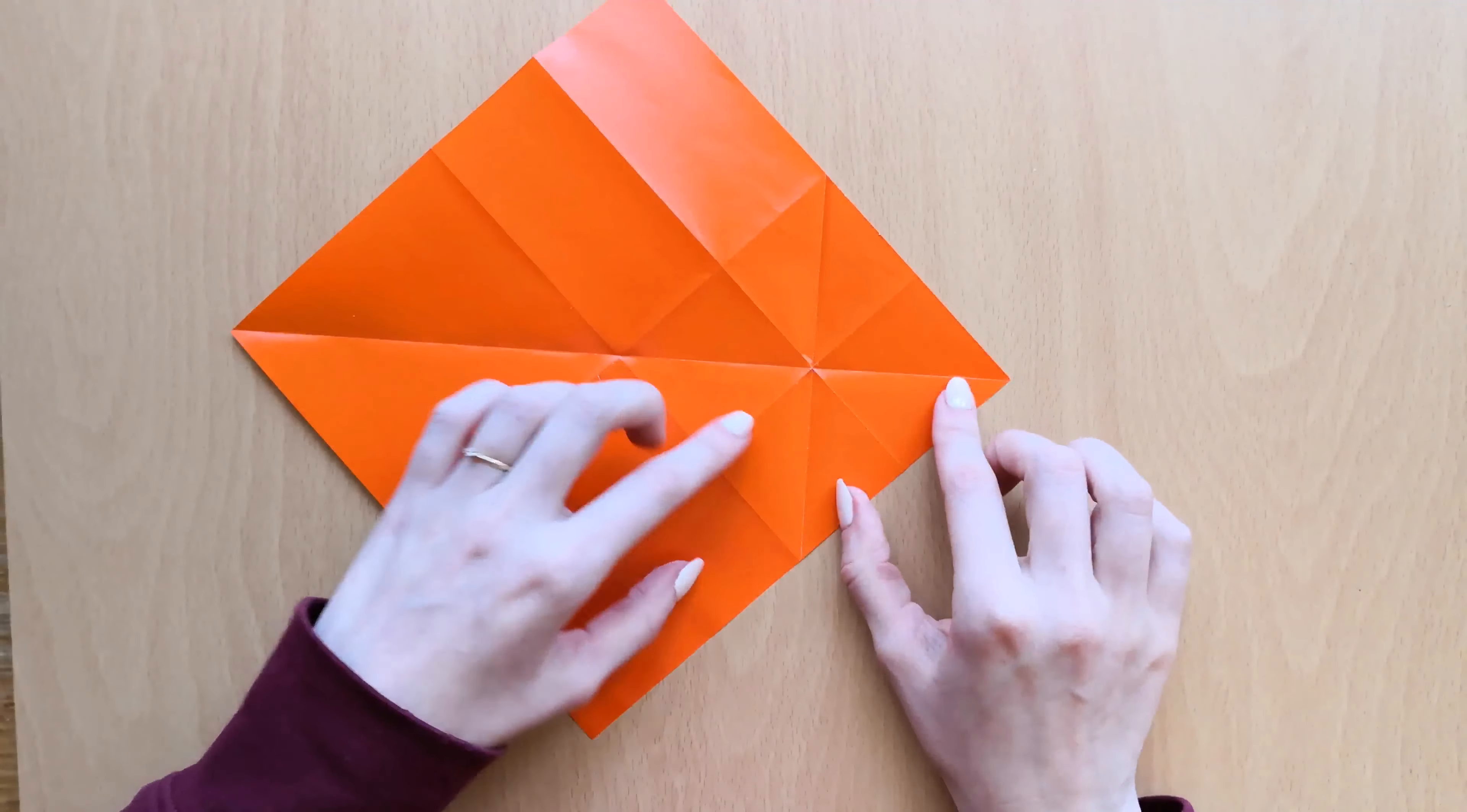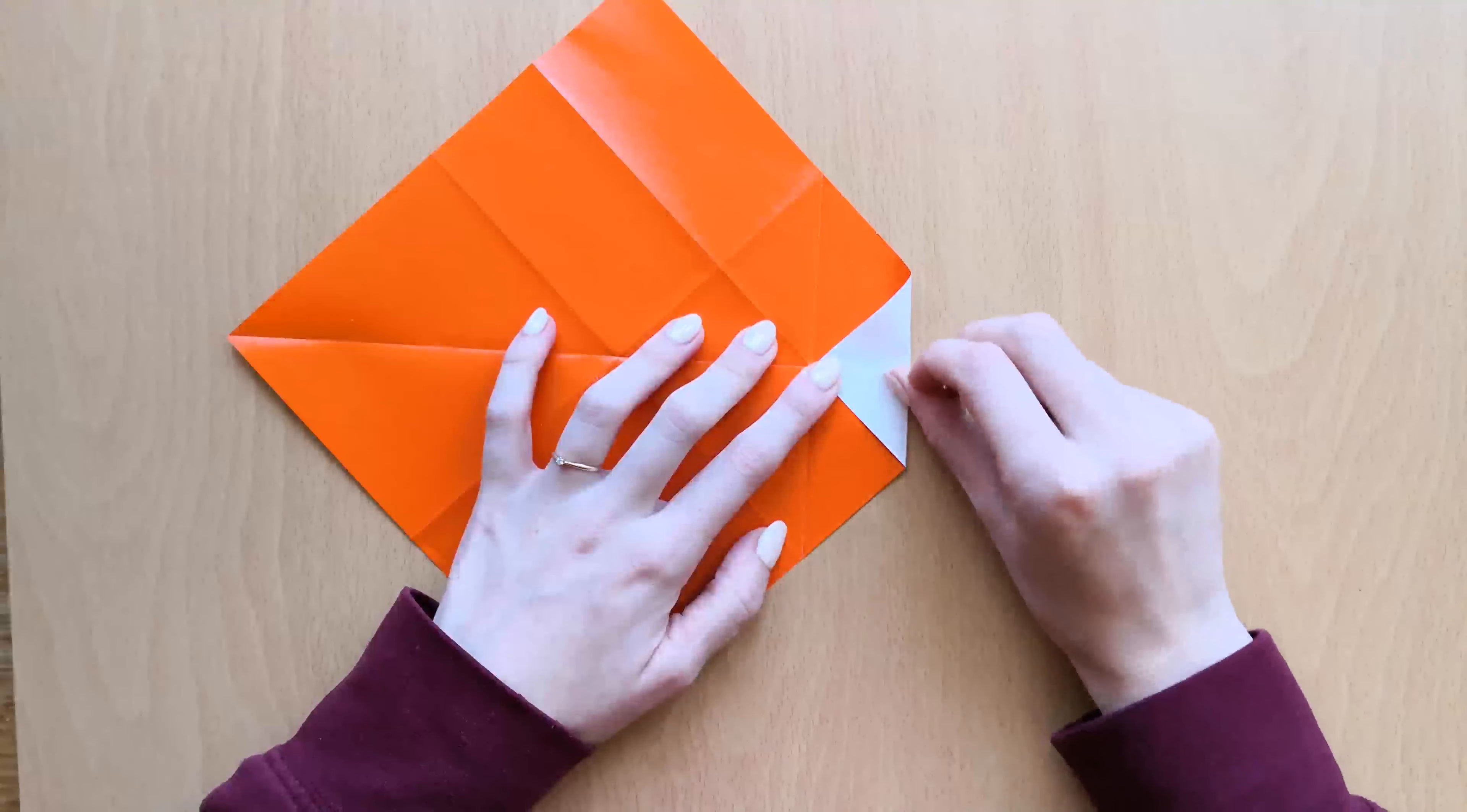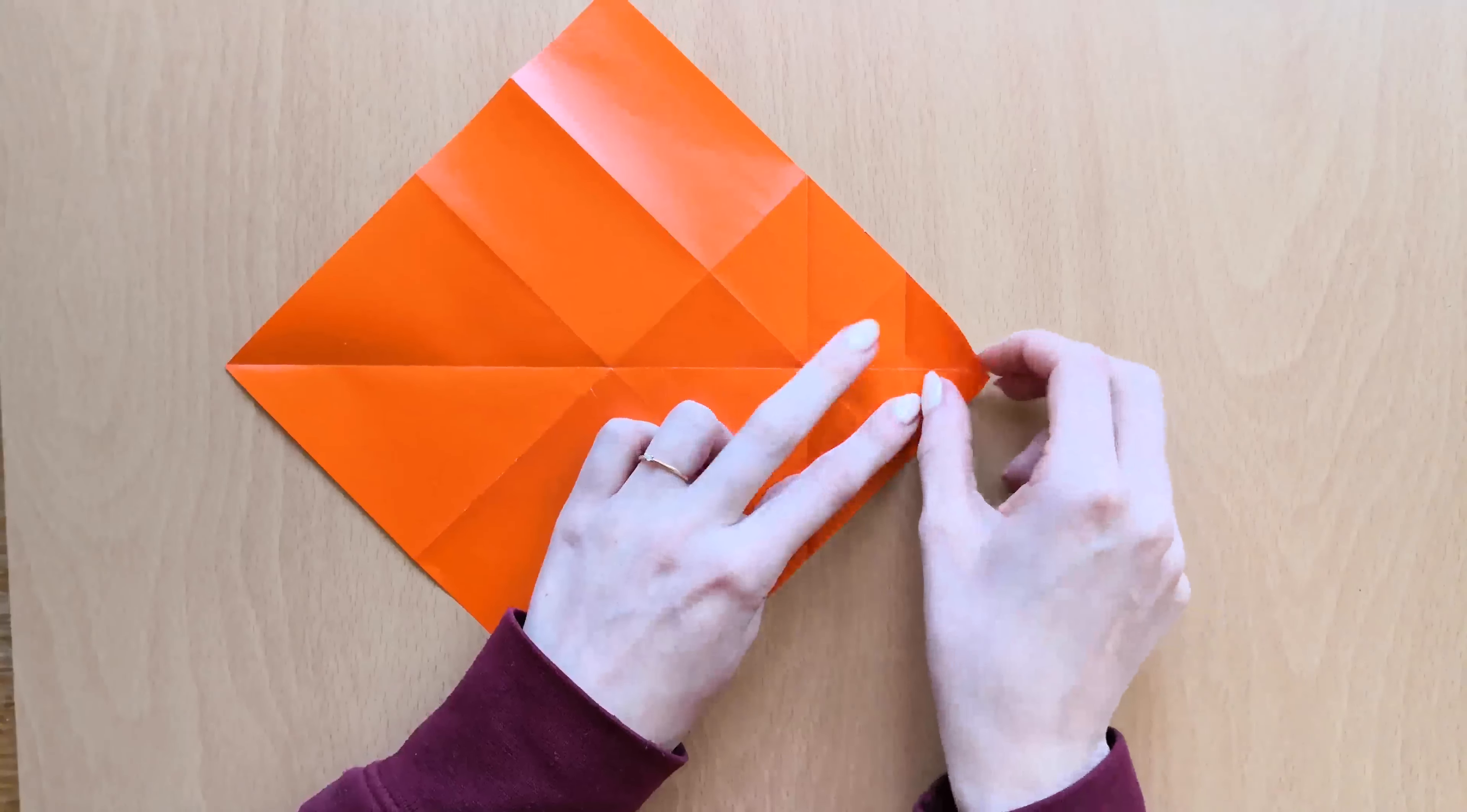Next we'll open it and we'll fold this point now to the new middle that we just made. Press it down, open it, and again we'll bring this point to the new cross that we just made.